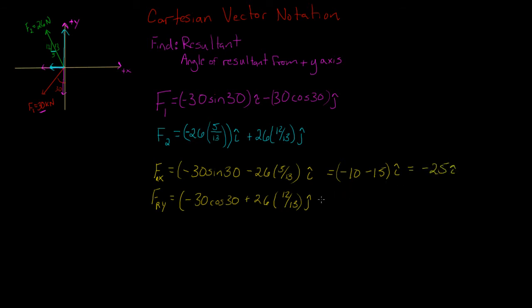And then this is going to be equal to minus 25.9 plus 24, I'm rounding here but 24, and that's going to be equal to minus 1.9 in the j direction.